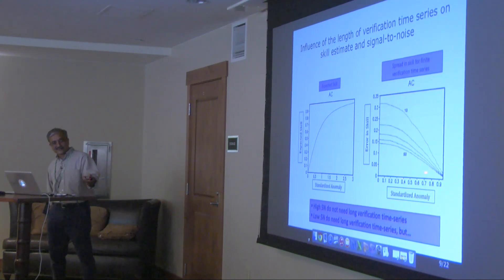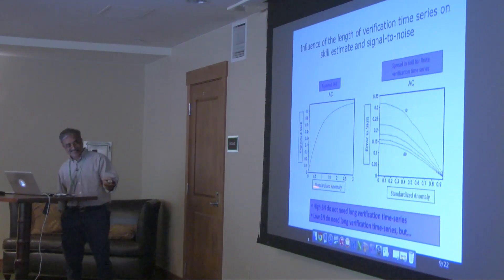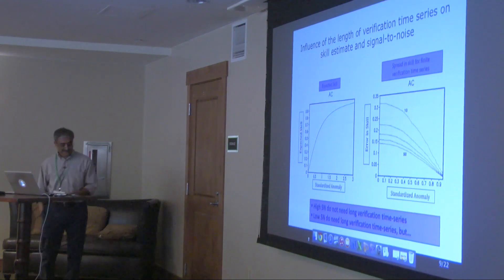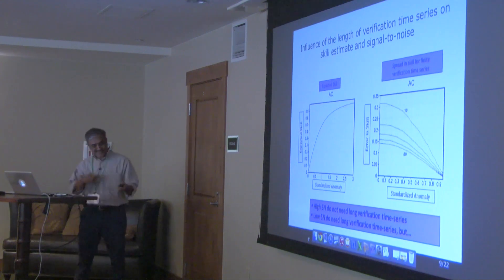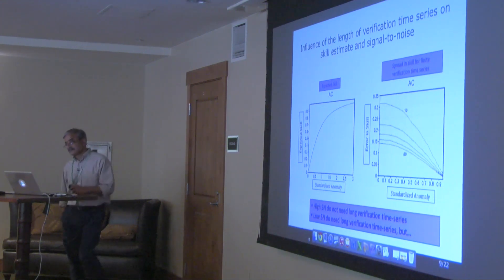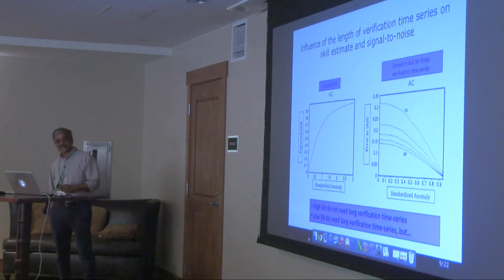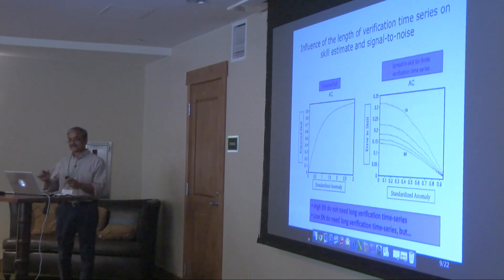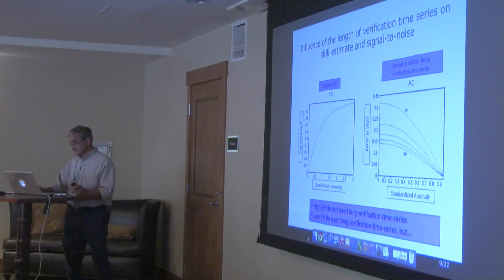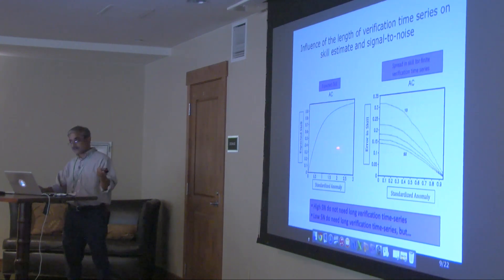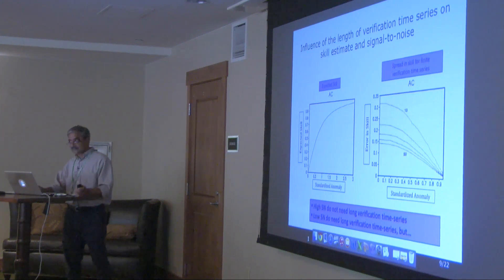For higher signal-to-noise, shorter time series are adequate. But in decadal prediction, we're likely sitting in regimes of low signal-to-noise. Designing experiments based on a short verification time series of 23 to 30 years of hindcast is going to generate a fair amount of error in estimating what the expected skill will be. This applies to anomaly correlation and can be derived for any other skill measure similarly.